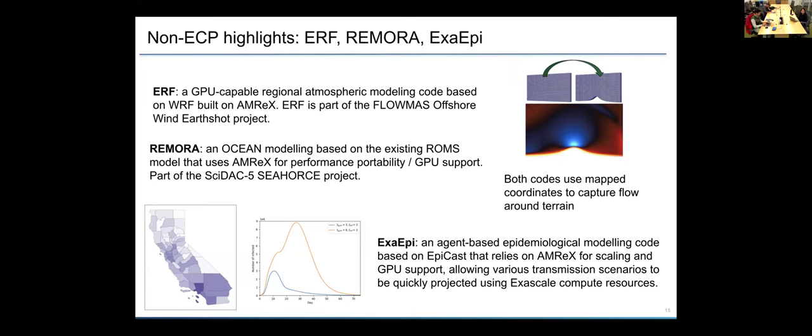And there's also ExaEpi, which is an agent-based epidemiological modeling code based on EpiCast that again relies on AMReX for scaling and GPU support, allowing various transmission scenarios to be quickly projected using GPU compute resources. So this is a model of kind of two different transmission scenarios at a California scale simulation and tracking the cases over time.